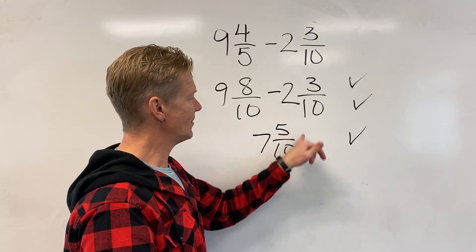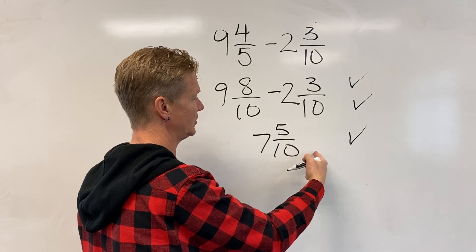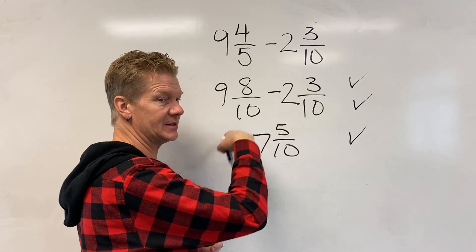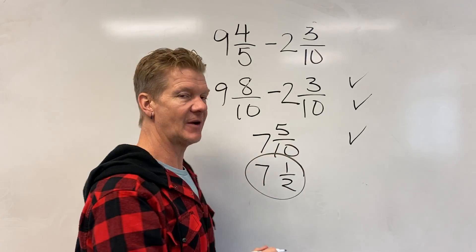You look for numbers that go into 5 and 10. In this case it's 5. Divide both by 5 and I get 1 over 2. But don't forget about the 7 whole pizzas, so this is 7 and 1 over 2. That's my final reduced answer.